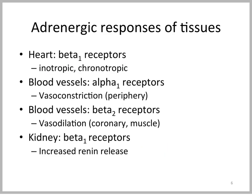Here I want to highlight some of the key adrenergic responses of tissues, and we'll pull it all together at the end to look at the fight-or-flight syndrome. The effects on the heart are through beta-1 receptors, increasing the strength and rate of the heartbeat, mainly at the SA node. The effects on blood vessels are mostly through alpha-1 receptors, leading to vasoconstriction — bringing core blood back to the main tissues during a stressful incident.